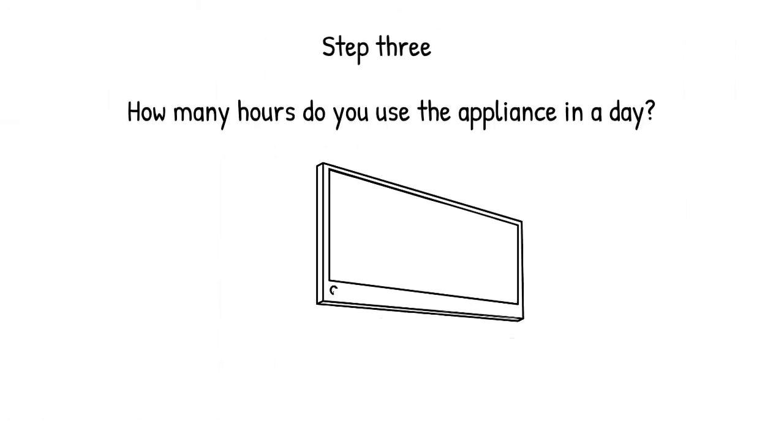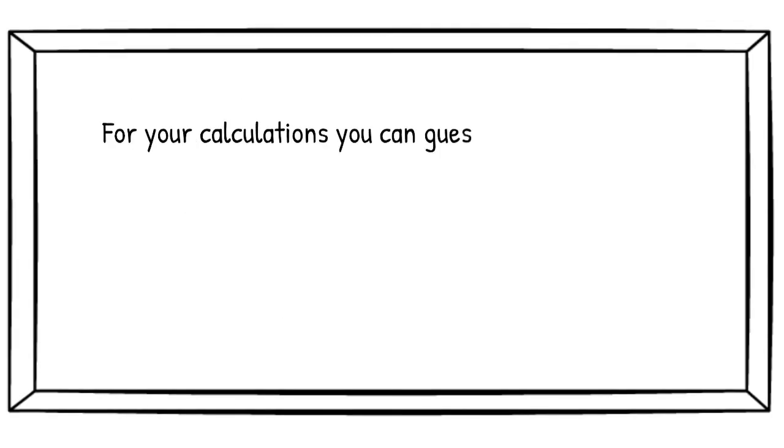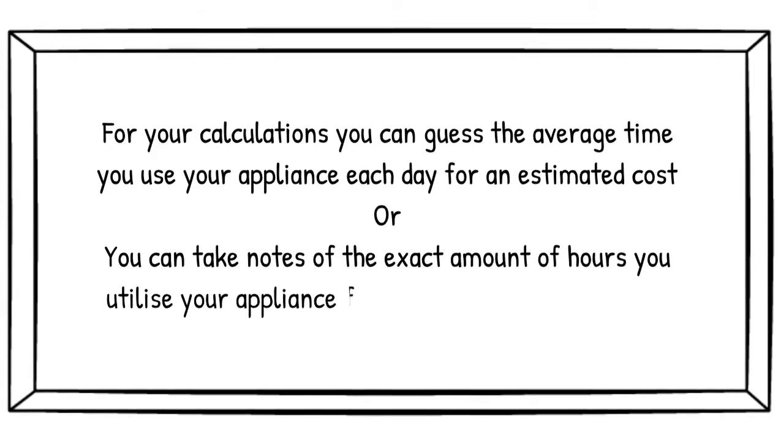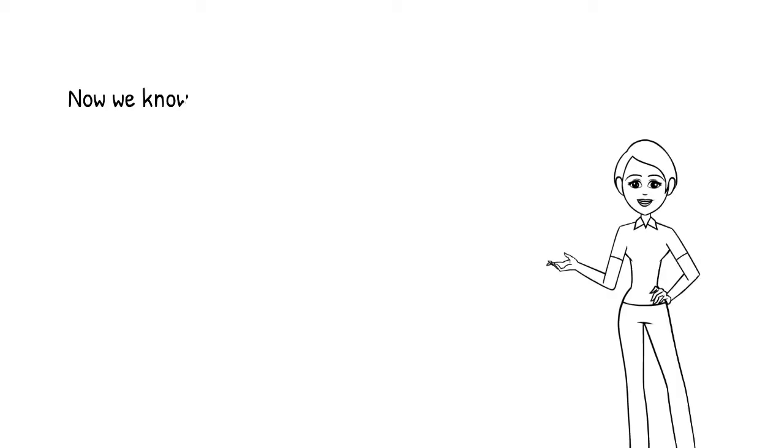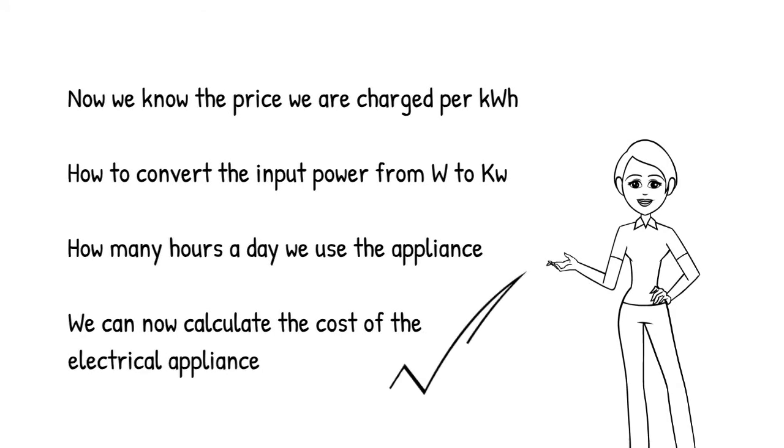Step 3 is to figure out how many hours a day you're using your appliance. For your calculations, you can guess the average time you use the appliance each day or you can take note of the amount of hours you utilize your appliance for a more precise calculation. Now we know the price we are charged per kilowatt hour, we know how to convert the input power from watts to kilowatts, and we also know how many hours a day we use the appliance. We can now calculate the cost.